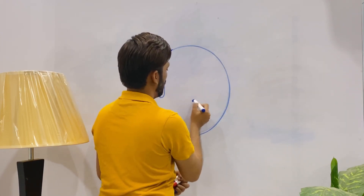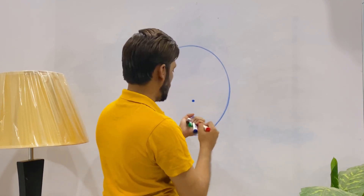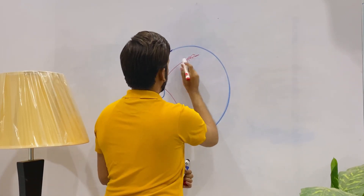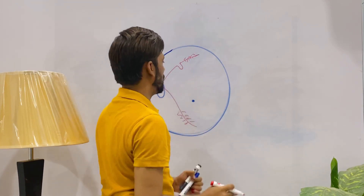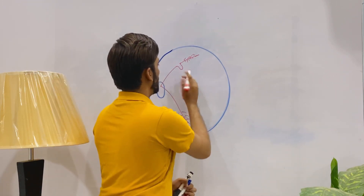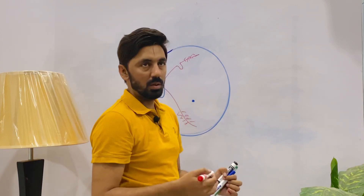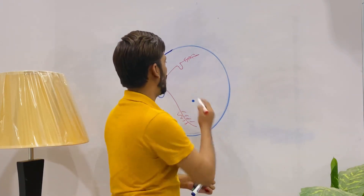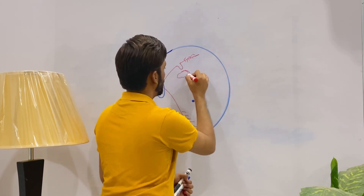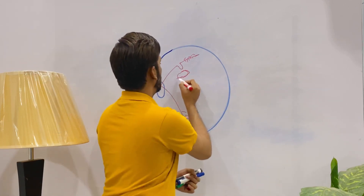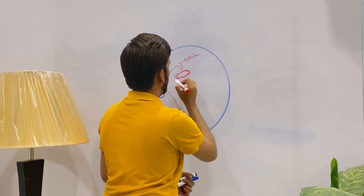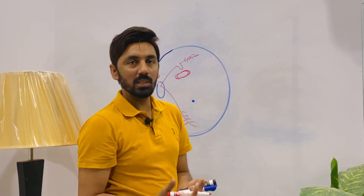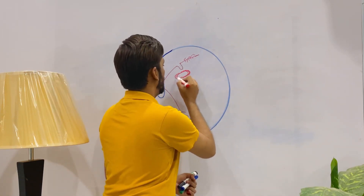Here we have the optic disc, the macula, and blood vessels including arteries. Consider a capillary that is ruptured or injured — this is a microaneurysm. Essential nutrients like platelets, white blood cells, red blood cells, and plasma are released and wasted at this point. Lipids and proteins are also released, and the dead bodies of lipoproteins along with macrophages — a form of white blood cells — are deposited here, forming hard exudates.